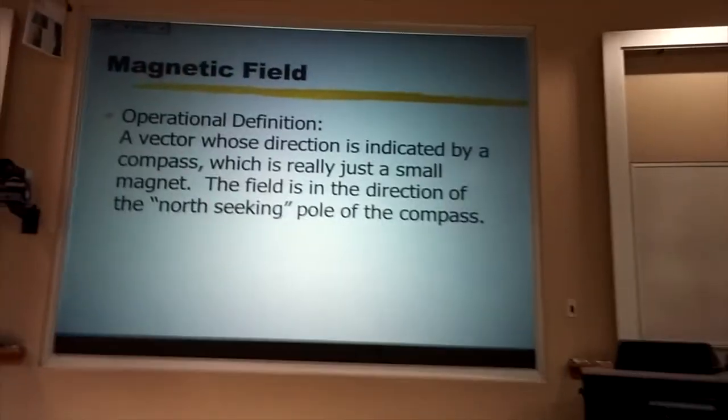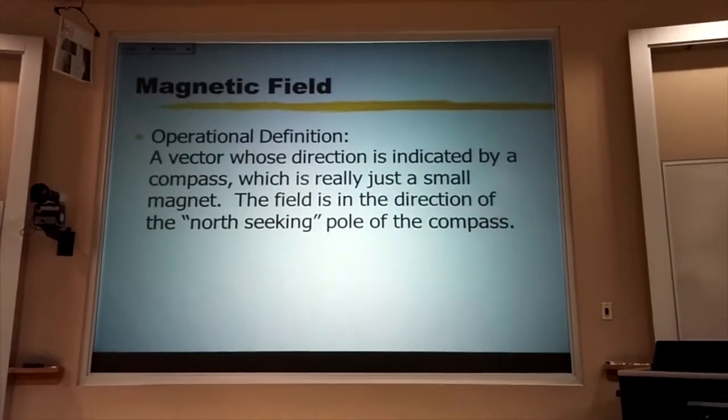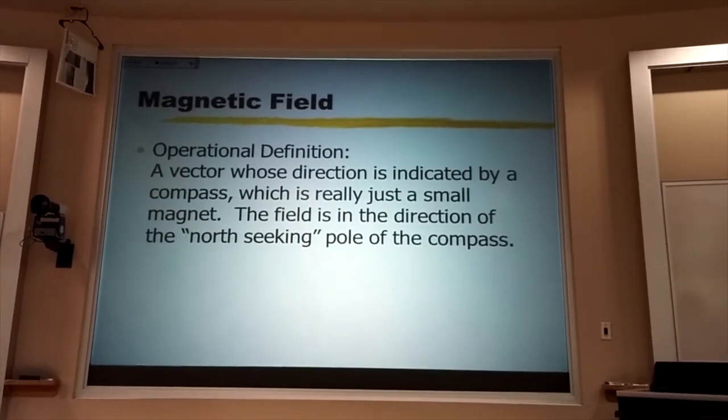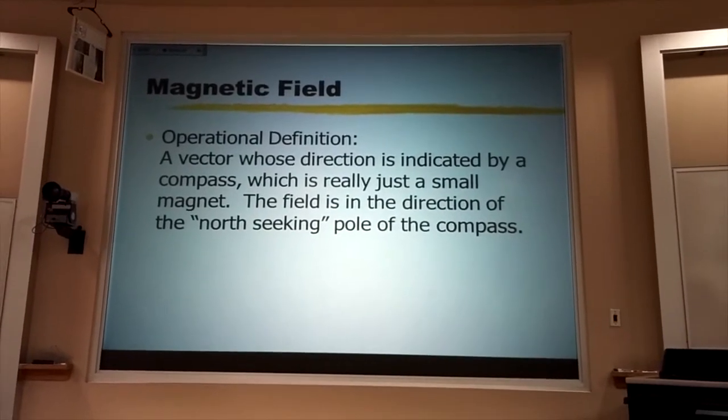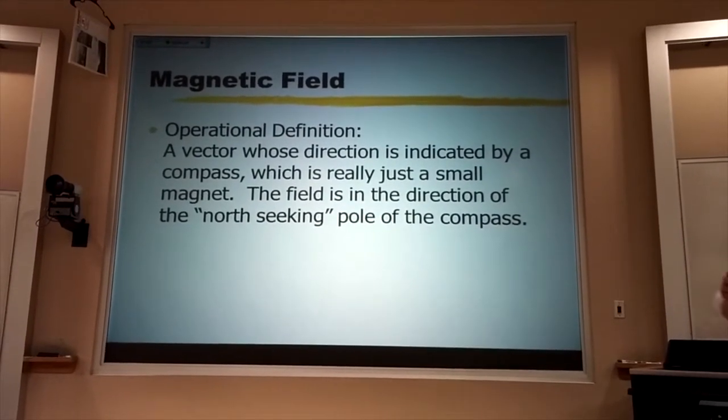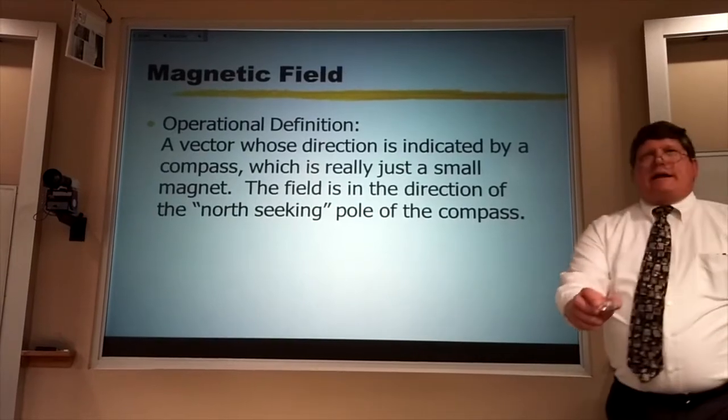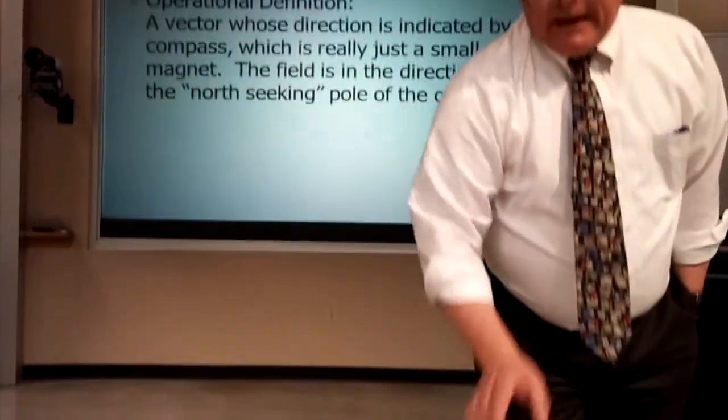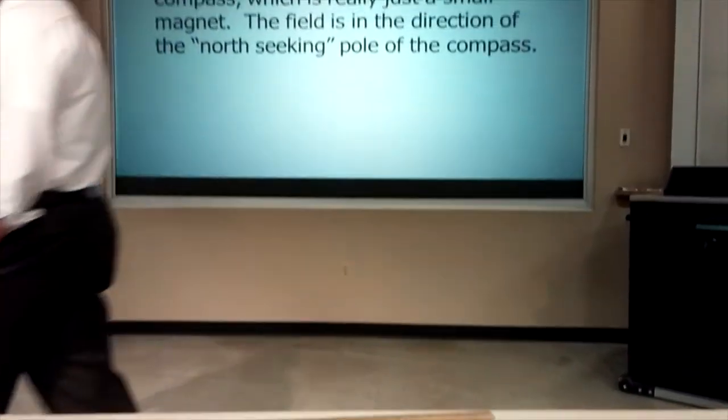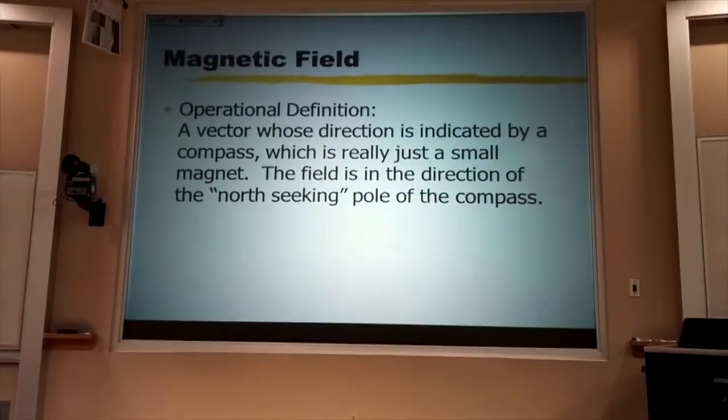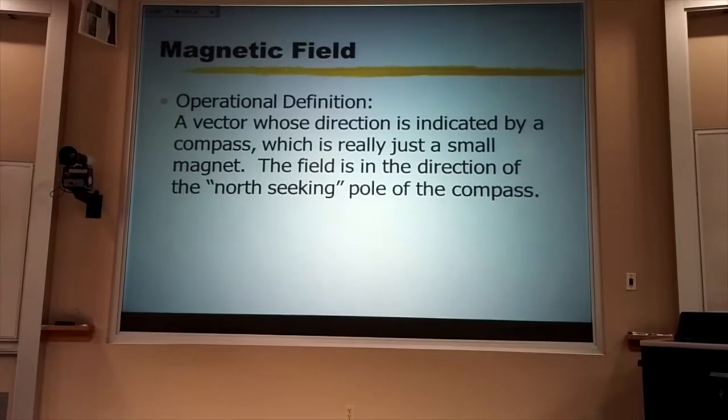Now, the direction of that field, in the case of a magnetic field, is very easy to visualize. All you have to do is take a compass and set it down, and the direction that that compass points is the direction of the magnetic field that it finds itself in.